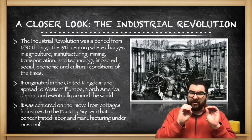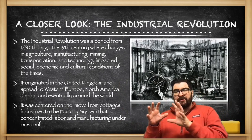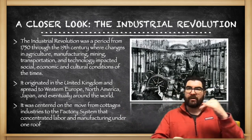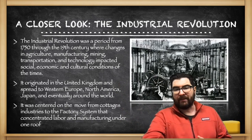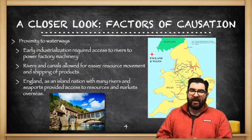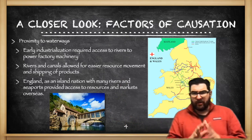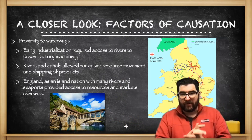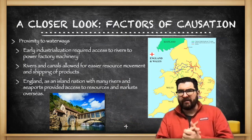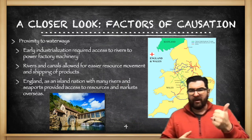It is centered on the move from cottage industries to the factory system that will concentrate labor in one location under one roof. We're going to spend the rest of this lesson talking about the factors of causation — why the Industrial Revolution begins when and where it does.